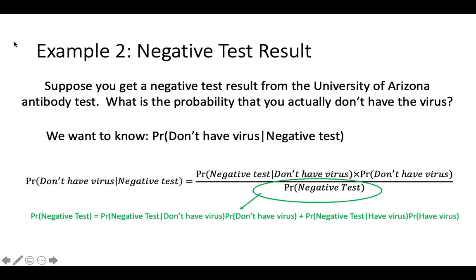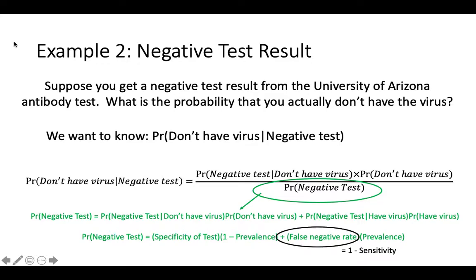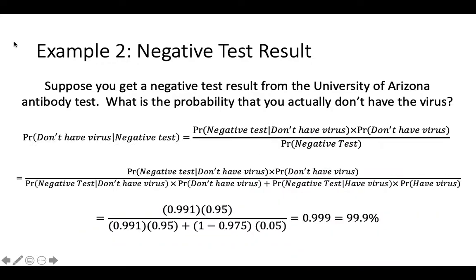We also know that the overall probability of having a negative test is the probability of getting a negative test when you don't have the virus, multiplied by the probability of not having the virus, plus the probability of having a negative test when you do have the virus, multiplied by the probability of having the virus. This equals the specificity of the test multiplied by 1 minus the prevalence, plus the false negative rate multiplied by the prevalence of the virus. Remember that the false negative rate equals 1 minus the test's sensitivity. If we plug the appropriate numbers into this equation, we find that if you have a negative test result, the chances that you truly don't have the virus are very high, almost 1.